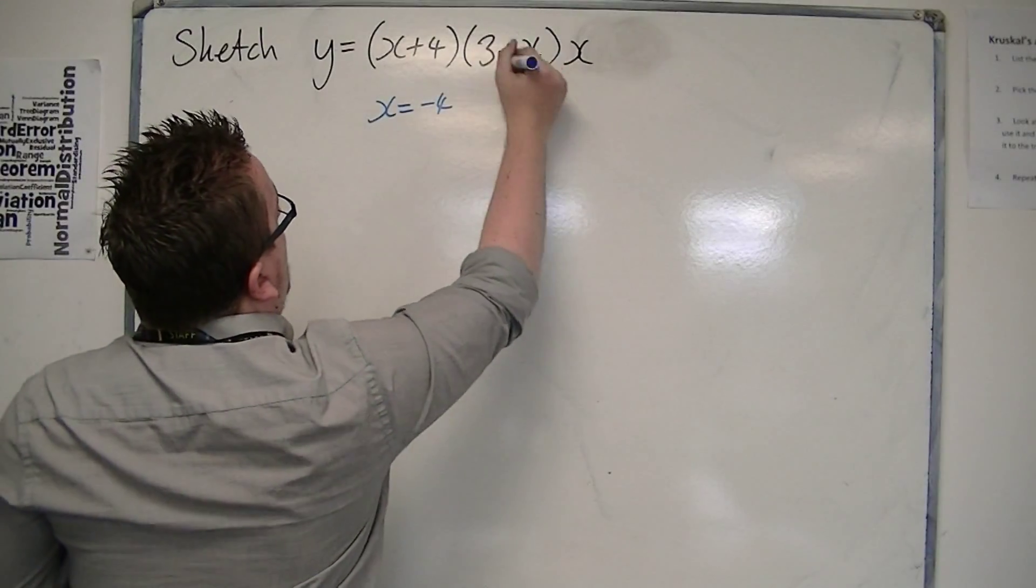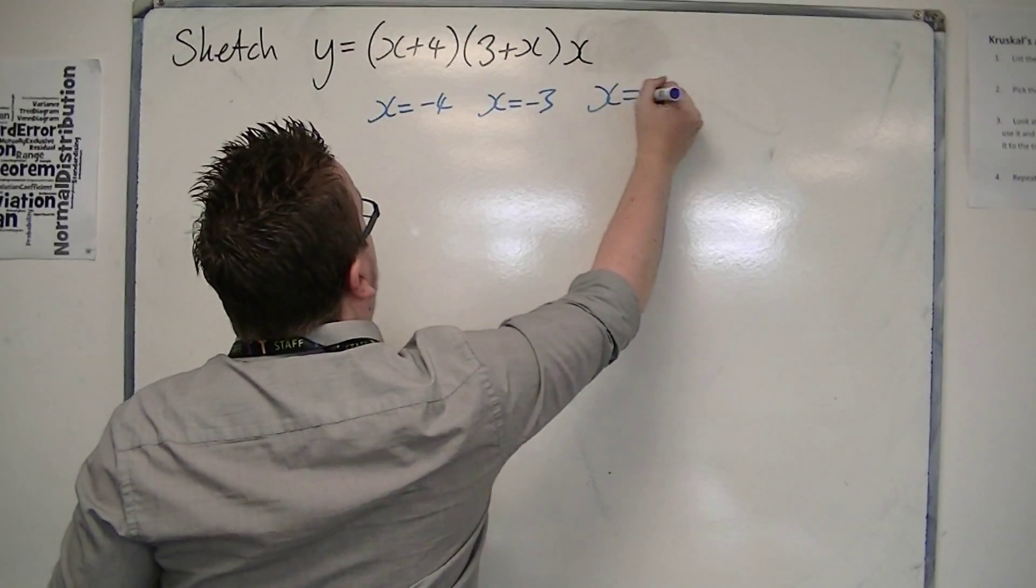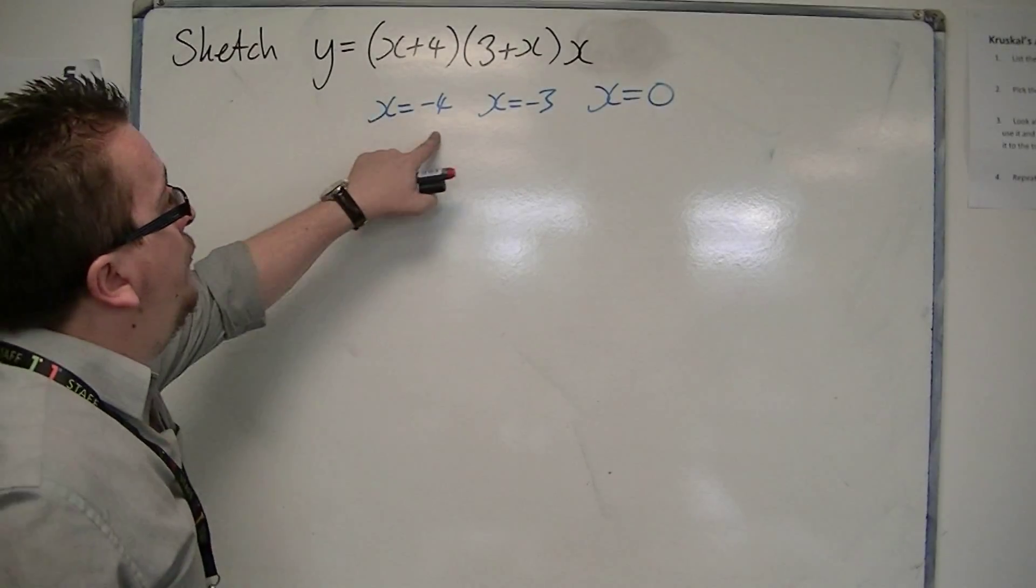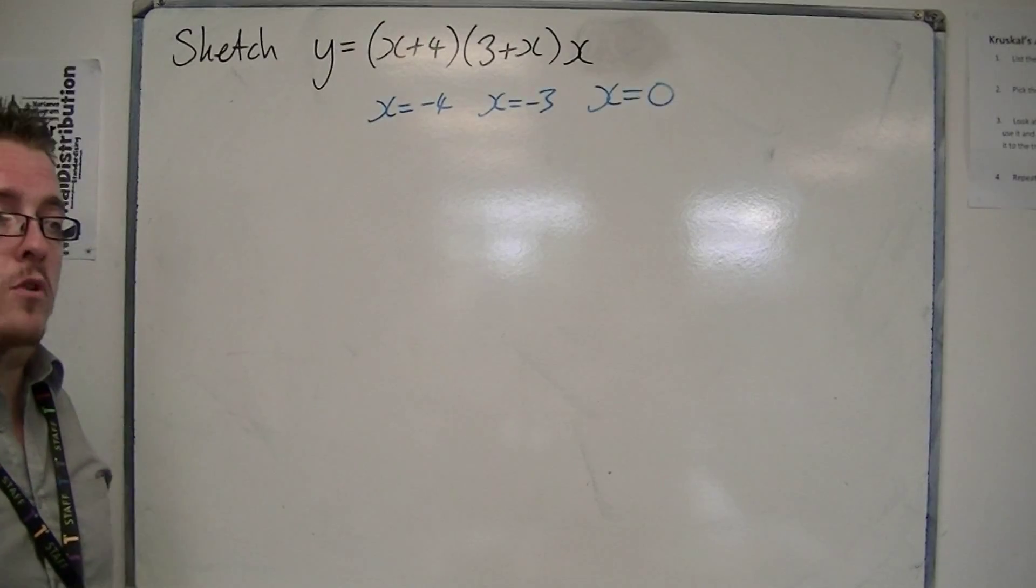From this bracket, x is minus 3, and from this term here, x is 0. So if x is minus 4, minus 3, or 0, the whole thing is going to be 0.